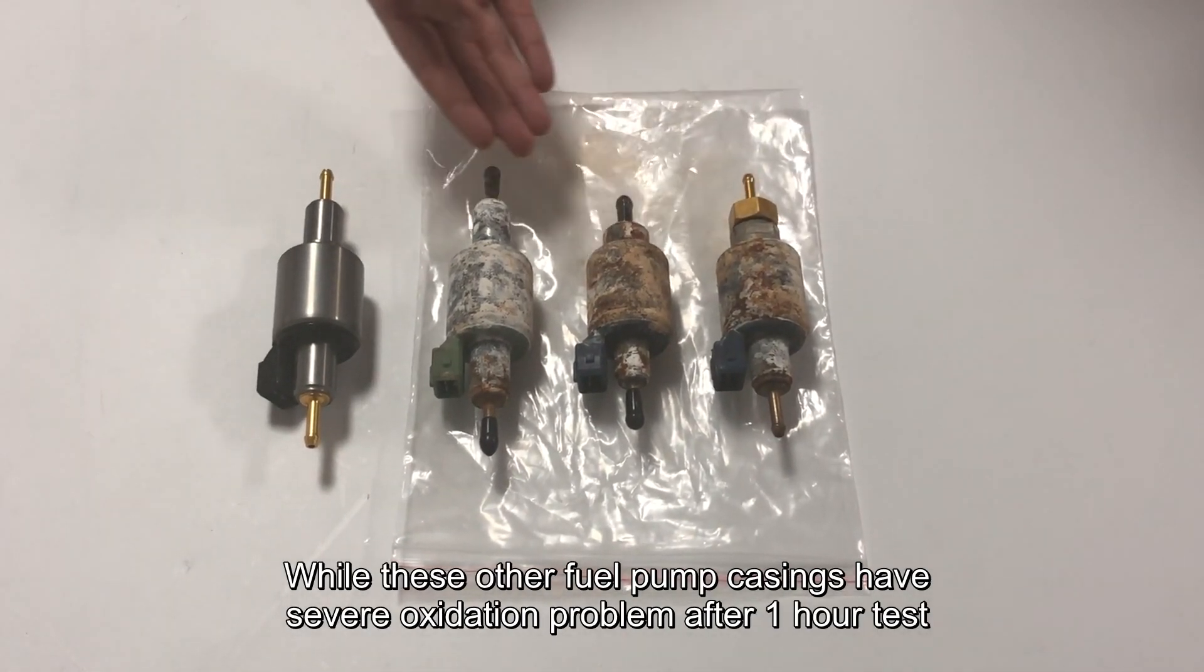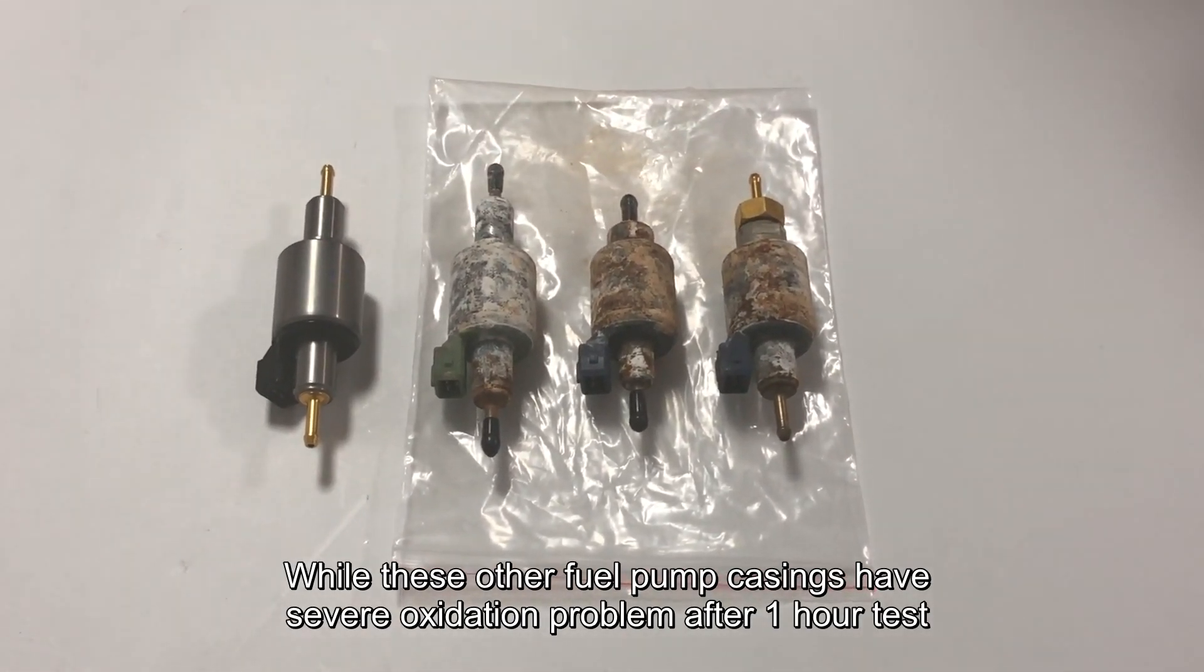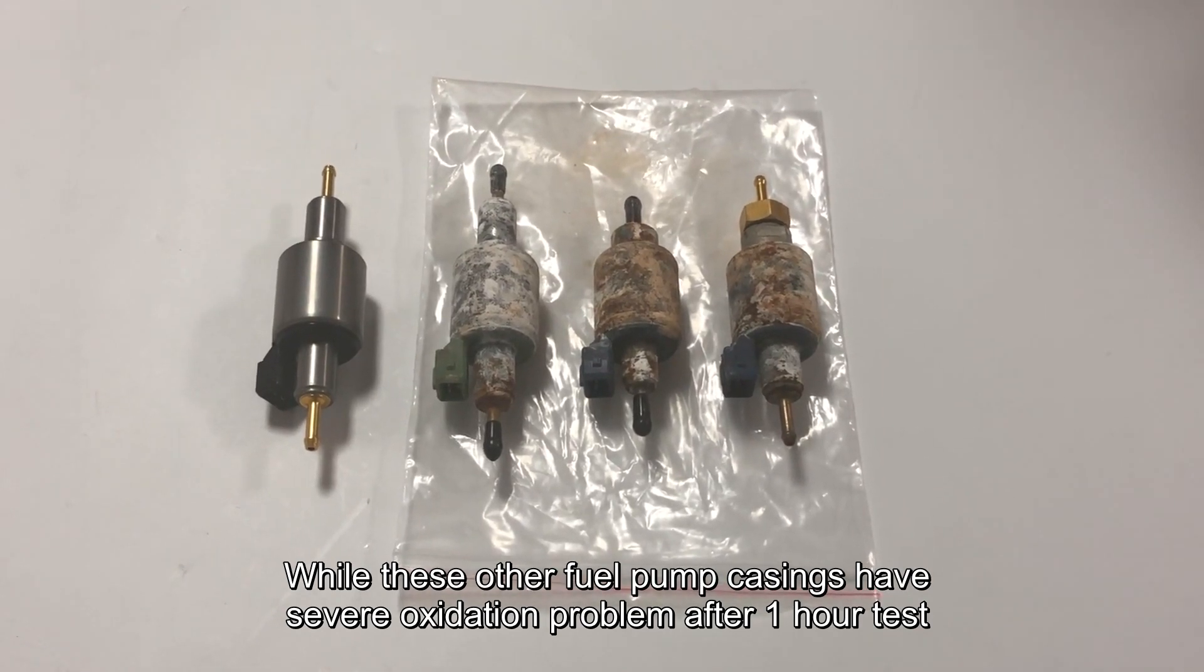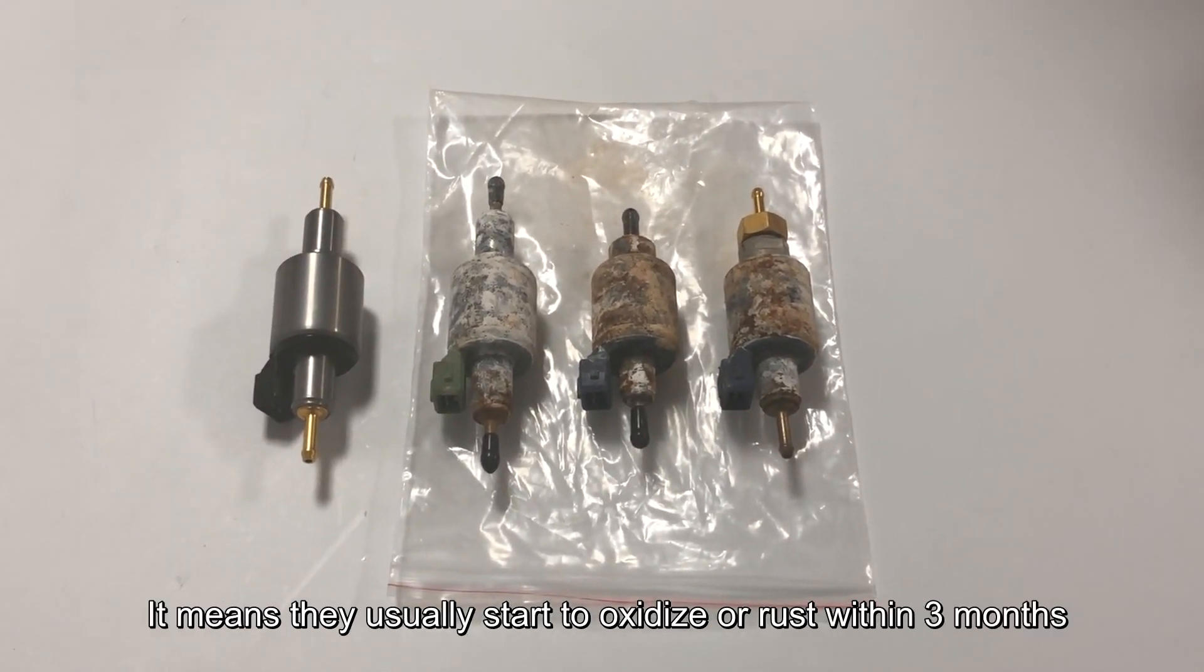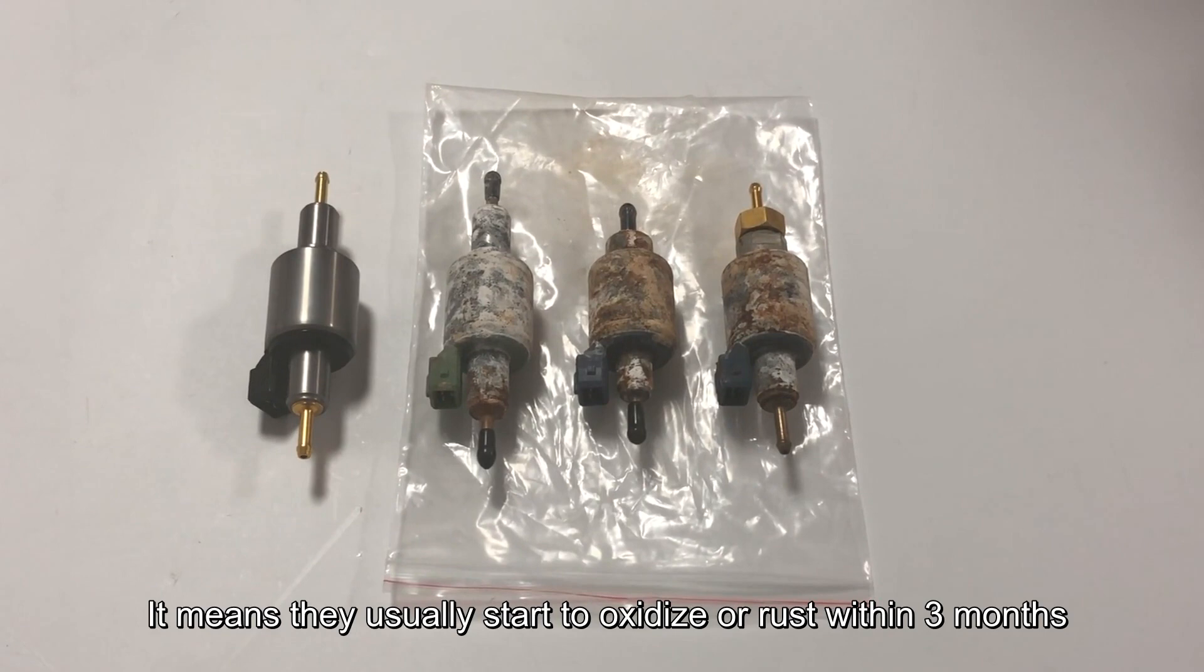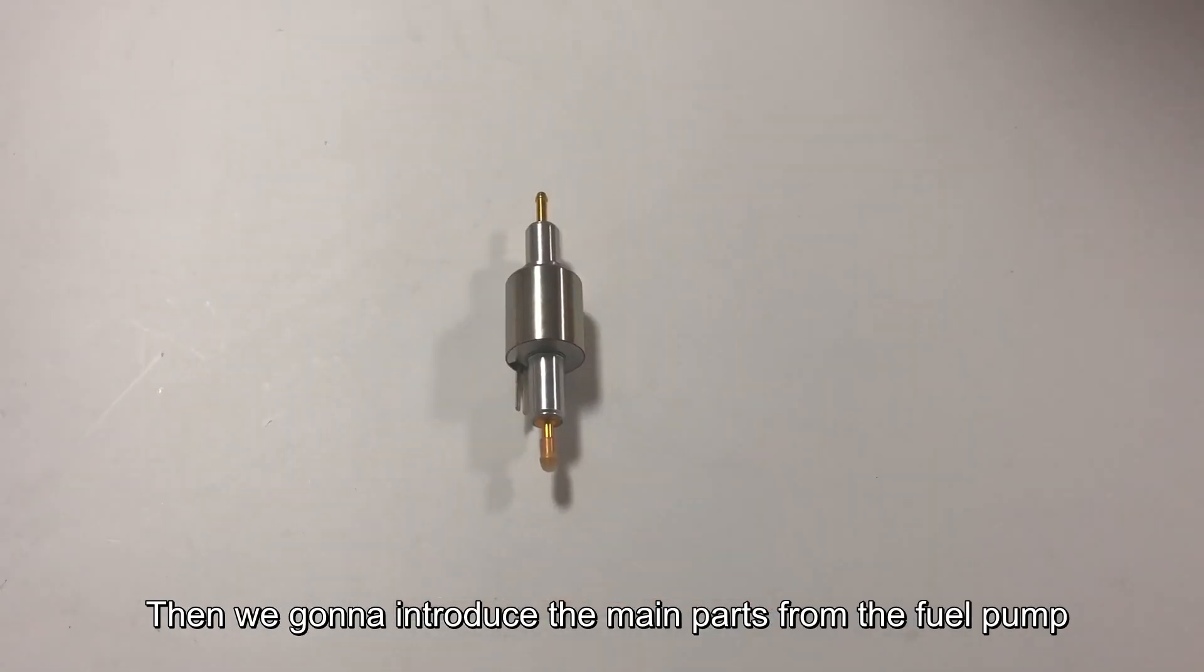While these other fuel pump casings have severe oxidation problems after 1-hour test, it means they usually start to oxidize or rust within 3 months. Then we're going to introduce the main parts from the fuel pump.